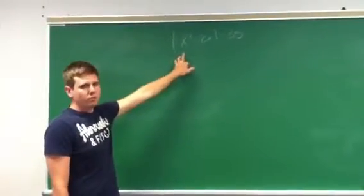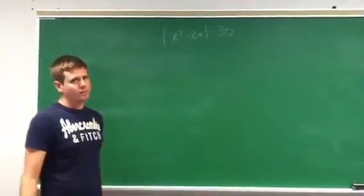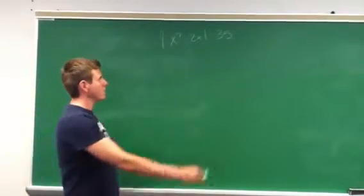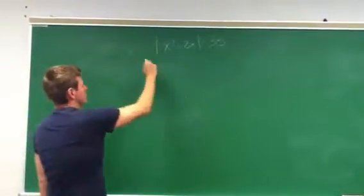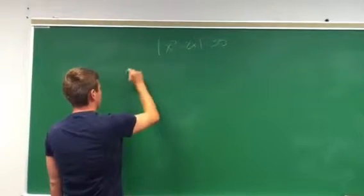Today I'm going to show you how to solve for the absolute value of x squared minus 2x equals 35. The absolute value is the distance from 0, so you're going to put this into a quadratic equation.